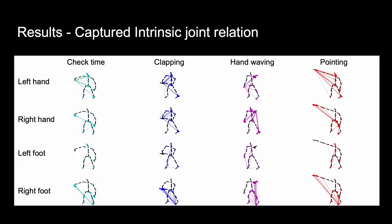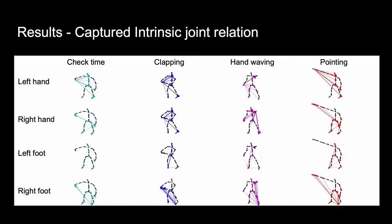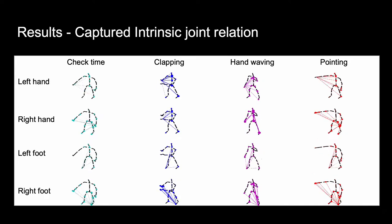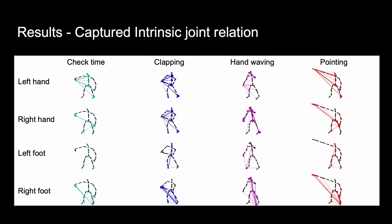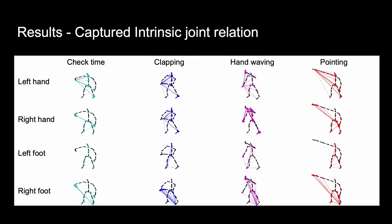Here, we illustrate examples of the skeleton and its corresponding topology inferred by InfoGCN to observe the patterns of how a joint attends to each other.